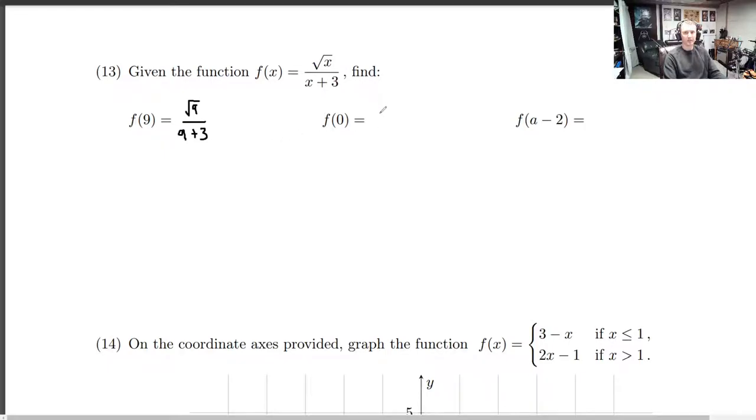And over here it's going to be the square root of 0 divided by 0 plus 3, because this just says plug in 0 for x. And what does this one say? It says plug in a minus 2 for x. So this is square root of a minus 2 divided by a minus 2 plus 3.